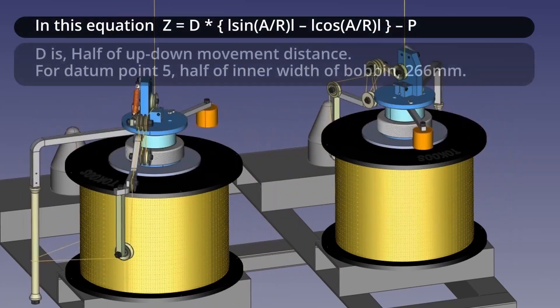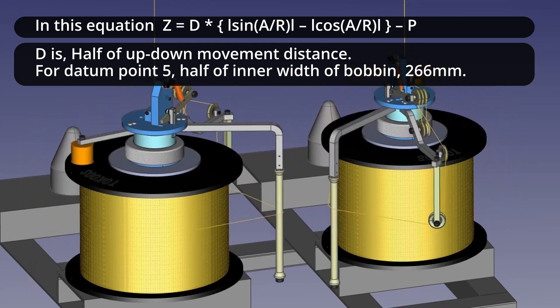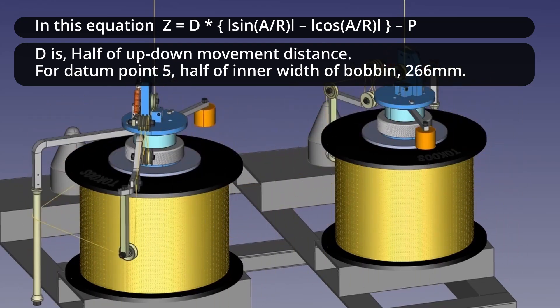In this equation, d is half of up-down movement distance. For datum point 5, half of the inner width of bobbin, 266 millimeter.